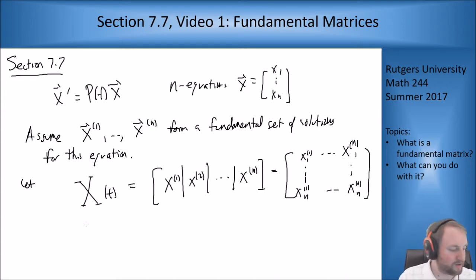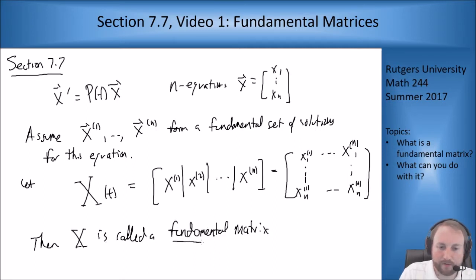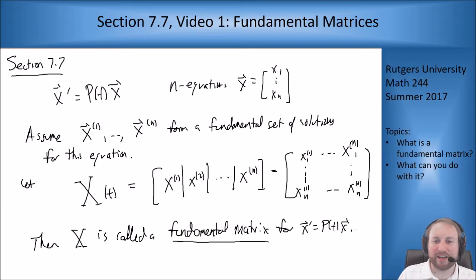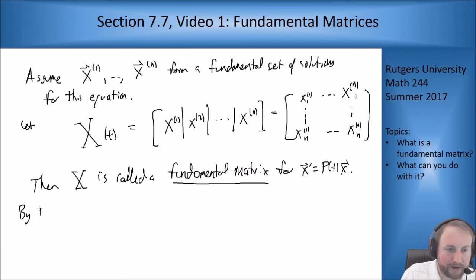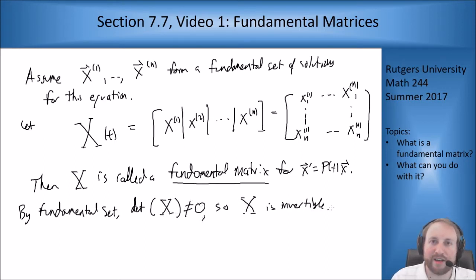The book uses the Greek letter psi for this matrix, but I'm going to use X, as I used it before when talking about this. Then X is called a fundamental matrix for the problem x' = P(t)·x. Now since we said these solutions form a fundamental set, that means the Wronskian — the determinant of X — is not zero. By the fundamental set property, det(X) ≠ 0, so X is invertible. We're going to use that in a moment.